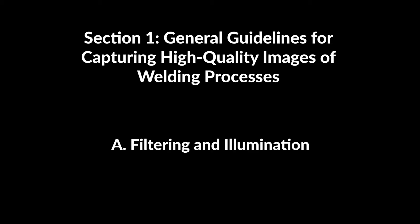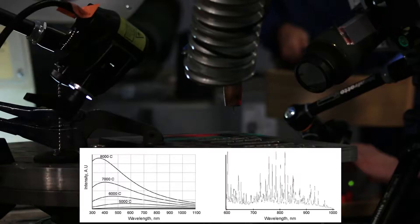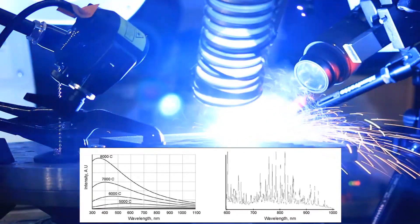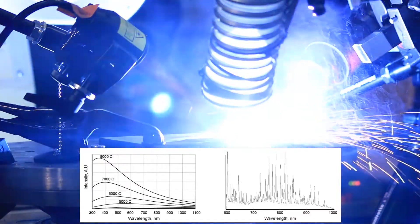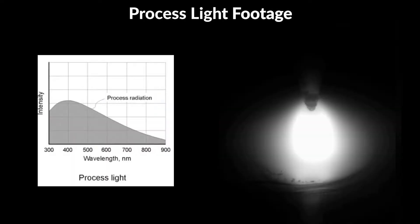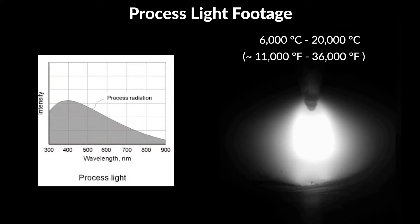Section 1: General Guidelines for Capturing High-Quality Images of Welding Processes. A. Filtering and Illumination. One way to image welding processes is to use the process light as the only light source for the camera, without the inclusion of active lighting. In this case, the illumination is mainly provided by the electric arc of the welding process, the temperature of which varies between 6,000 and 20,000 degrees Celsius, depending on the process.